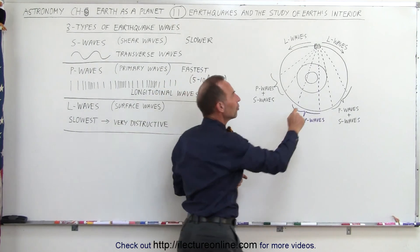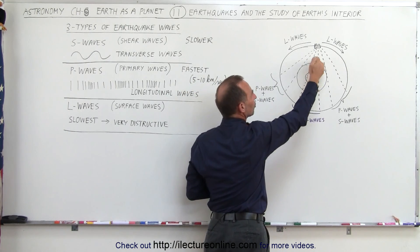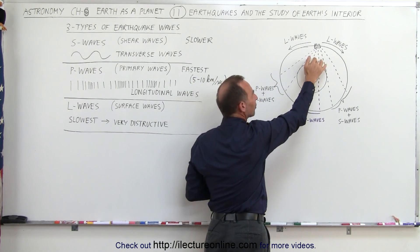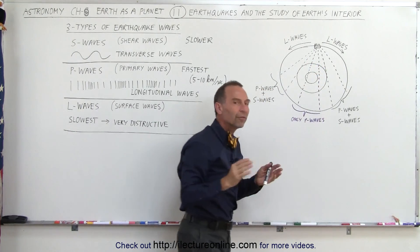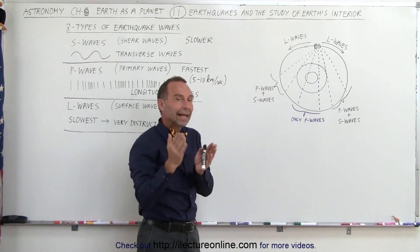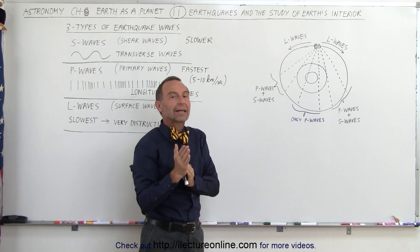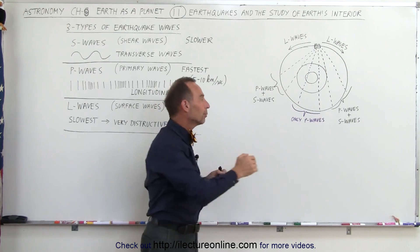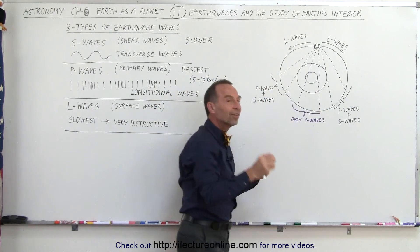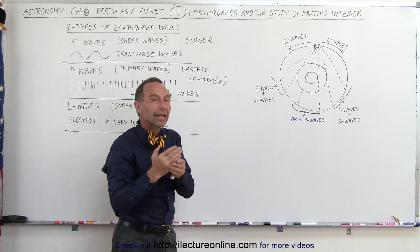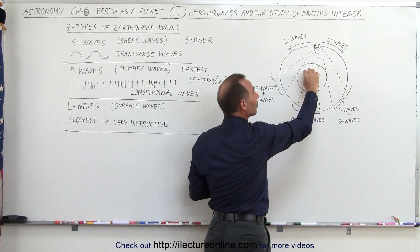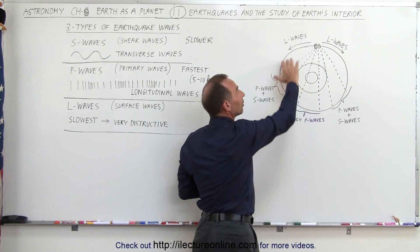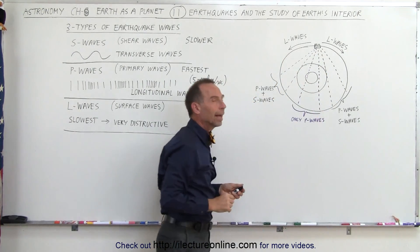In addition to that, we also know that when there's a transition from the mantle to the liquid core, from the liquid core to the solid core, whenever there's a transition of energy waves like that, they tend to bend or refract. We can also calculate, when they arrive on the other side, how much they bend and how much they refract, and from that we can also figure out the exact size of the solid core at the center and the liquid core around it, as well as the size of the mantle around that.